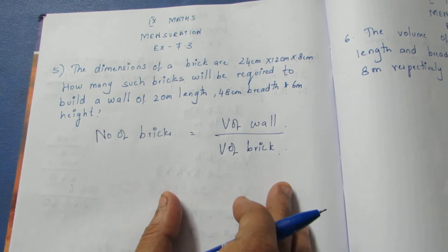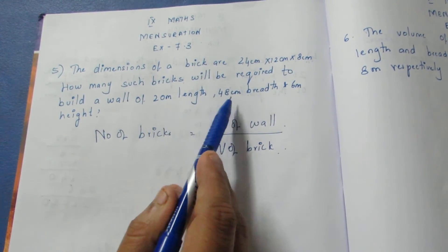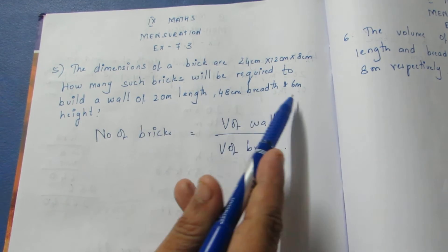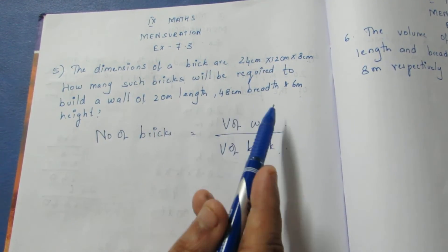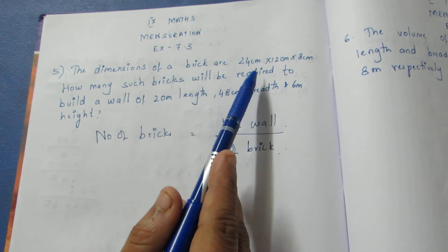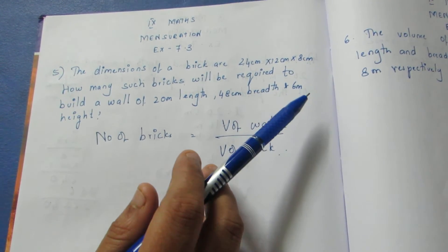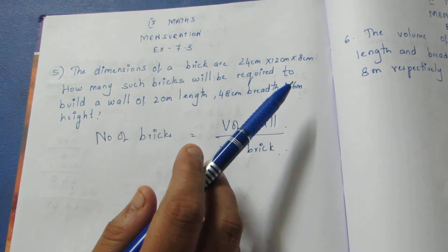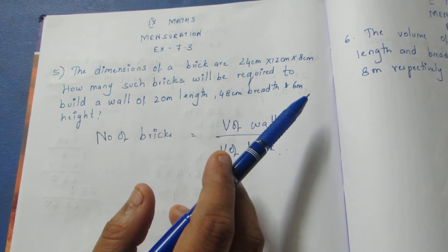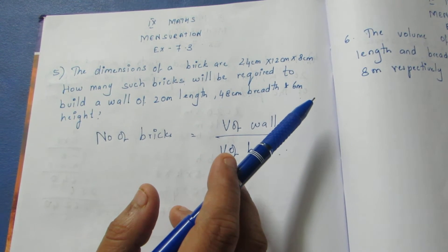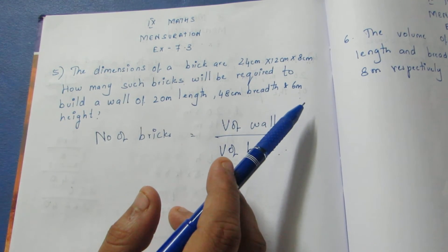Looking at this, here are dimensions: 3 cm, 2 cm, and 2 meters. We need to convert units — multiply by 100 to convert meters to centimeters. So 20 meters becomes 2000 cm and 6 meters becomes 600 cm.